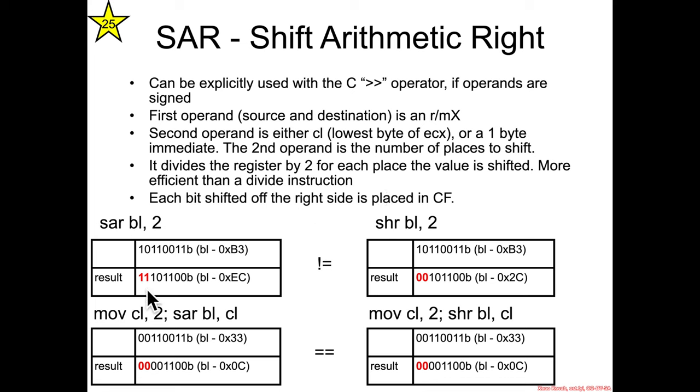But what differentiates a shift arithmetic right from a shift logical right is that previously when you shifted to the right, the most significant bits would get filled in with zeros always and unconditionally. Now with a shift arithmetic right, the most significant bits are going to be filled in with whatever the signed bit is. So intuitively you can think of this like, we're dealing with signed values.